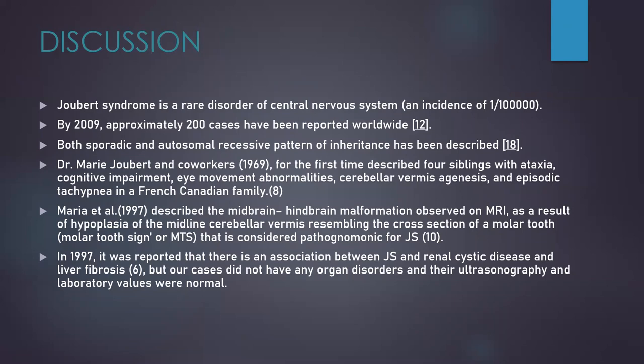Coming to the discussion, Joubert syndrome is a rare disorder of the central nervous system with an incidence of 1 per 100,000 children. Only a few cases have been reported worldwide; by 2009, approximately 200 cases had been reported. Both sporadic and autosomal recessive patterns of inheritance have been described. Dr. Mary Joubert and co-workers in 1969 for the first time described four siblings with ataxia, cognitive impairment, eye movement abnormalities, cerebellar vermis agenesis, and episodic tachypnea in a French-Canadian family. In 1997, this midbrain-hindbrain malformation on MRI was described as hypoplasia of the midline cerebellar vermis resembling the cross-section of a molar tooth, which is pathognomonic for Joubert syndrome. In the same year, association between Joubert syndrome and renal cystic disorders and liver fibrosis was reported. But in our cases, there were no organ disorders and ultrasonography and laboratory findings were normal.